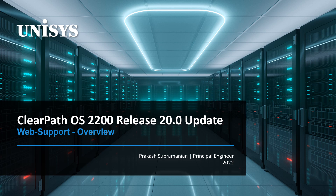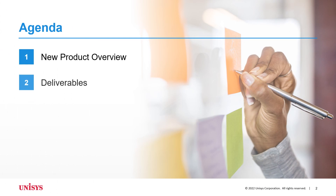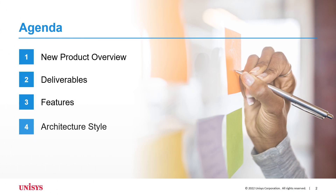This presentation covers the web support product updates for ClearPath OS 2200 release 20.0. Today, we are going to cover the following topics: product overview, product deliverables, its features, and its architecture style.